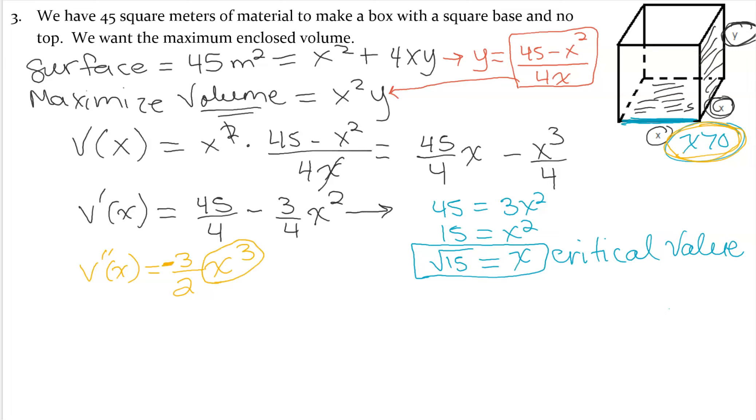Now knowing that x is a positive number, positive number multiplied by negative 3 halves is going to be less than 0 always. So this function is always concaving down, and when a function is always concaving down, we would have a maximum wherever the critical point is, and that would be when x is square root of 15.